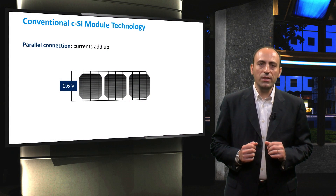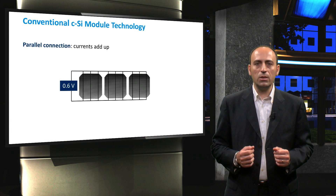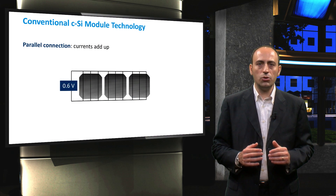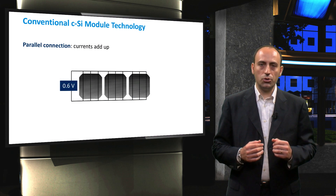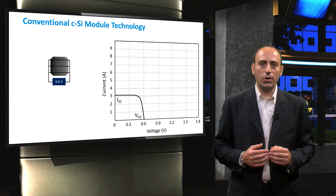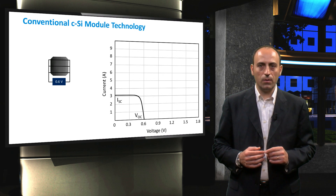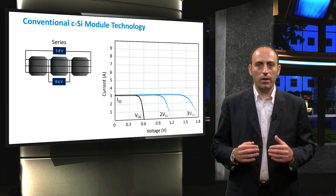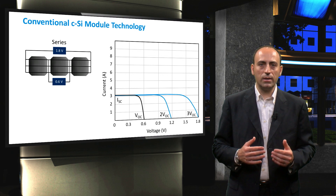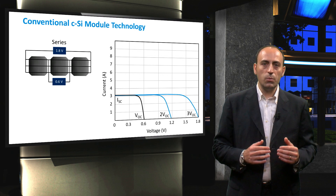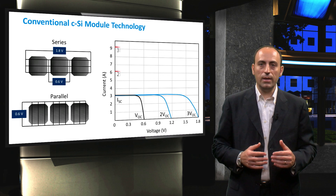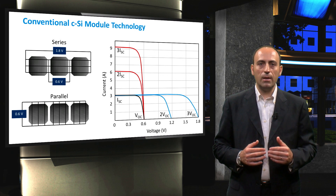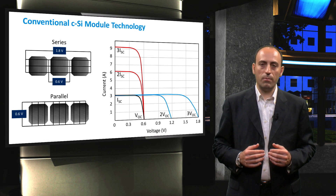The second way to interconnect the solar cells is in parallel. In case of completely identical cells, the voltage of the module remains the same while the currents of the solar cells add up. The black line depicts the IV curve of a single solar cell. When we connect two or three solar cells in series, the result is the blue line, where the voltages add up while the current stays the same. If we connect three cells with the same IV characteristics in parallel, indicated by the red line, then the current becomes three times as large while the voltage remains the same.